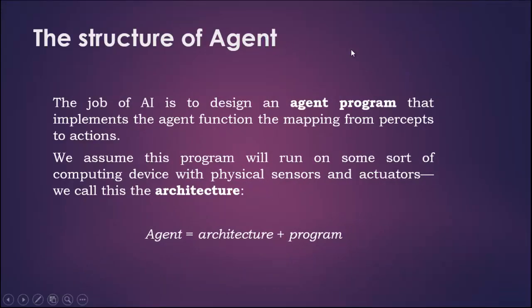The job of AI is to design an agent program that implements the agent function — the mapping from percepts to actions. We assume this program will run on some sort of computing device with physical sensors and actuators; we call this the architecture.